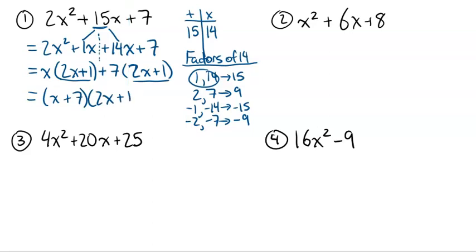If you don't believe me, think about what would happen if you expanded (x + 7)(2x + 1). The whole principle of expanding is taking the first term and multiplying it by every term in the other brackets — so x times (2x + 1) gets us the first half, and then 7 times (2x + 1) gets us the second half. So if you're ever wondering whether you factored it properly, think about expanding — it's the opposite of factoring. When you get 2x + 1 twice, you write what's in front of the brackets in one set of brackets and then 2x + 1 only once, because both the x and the 7 are being multiplied by 2x + 1.